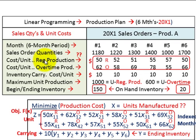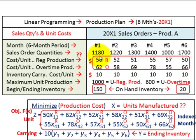Underneath the sales quantities we have our cost per unit. For regular production — not paying any overtime — and then underneath that we have the cost per unit for overtime production for manufacturing each of those products on a unit basis for product D. For month one, regular production cost is $50 per unit and if we build any in overtime, $62 per unit. Each of the successive months also shows the regular and overtime production cost on a unit basis.